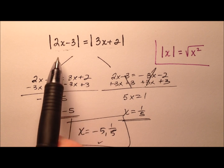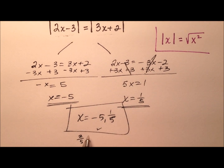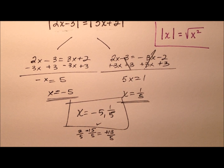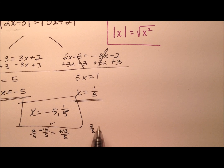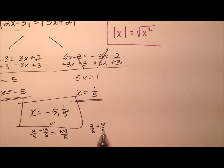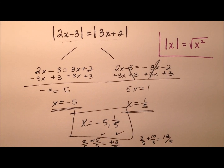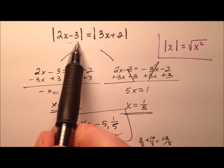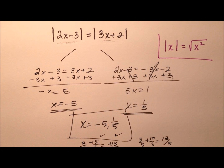Now let's try x equals 1 fifth. 2 times 1 fifth is 2 fifths, and subtracting 3 is subtracting 15 fifths, giving negative 13 fifths. The absolute value of that is positive 13 fifths. On the other side, 3 times 1 fifth is 3 fifths, and adding 2 is adding 10 fifths, giving 13 fifths as well. So both values work. This is the more traditional, practical way — take the positive-positive case and the positive-negative case to get our two values.